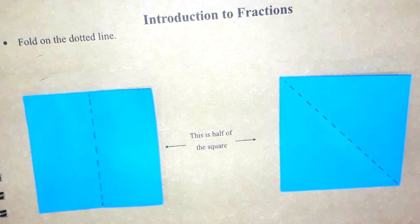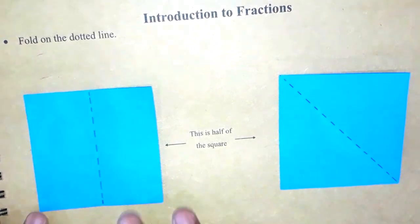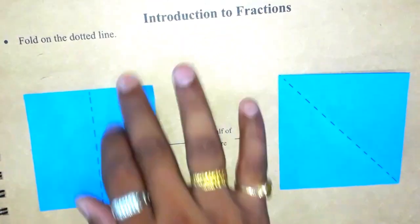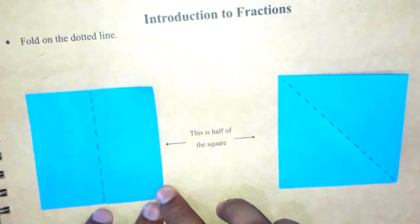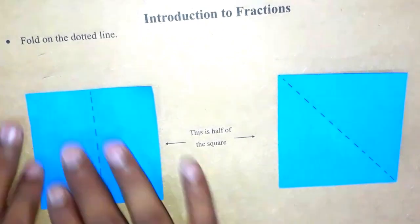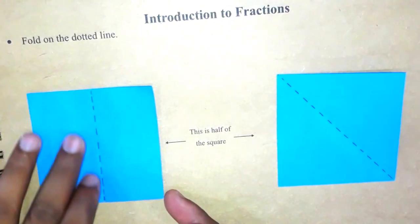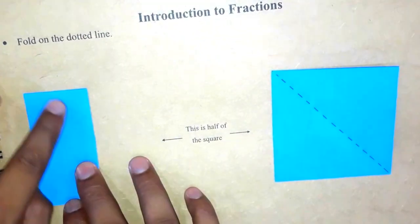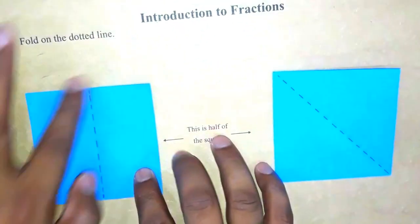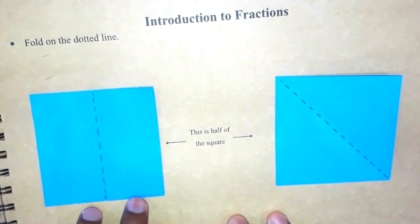Hi students! Today in this video we are going to play with these shapes. This is a square, and this is another square. A square is a figure which has four equal sides. So if this side is 10 centimeters, this is also 10 centimeters. Now you can see I have made a dotted line on both squares. If we fold from the dotted line, you will see this part is exactly half of this square. This is one way of making half of a square.